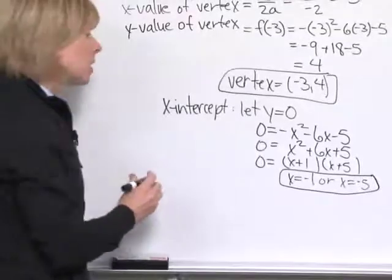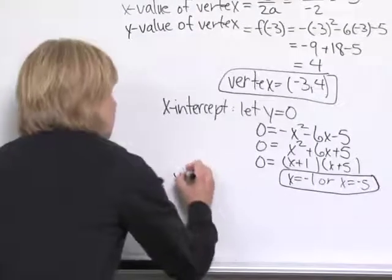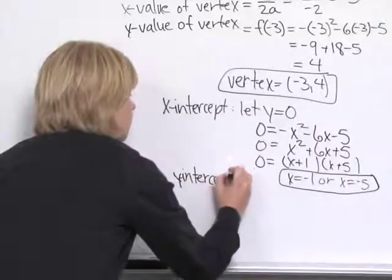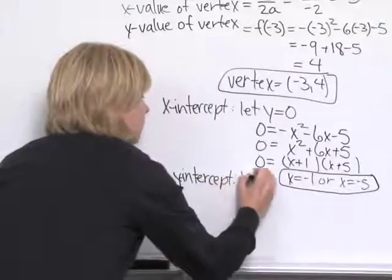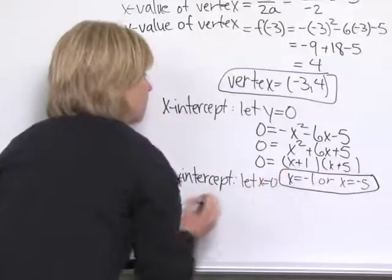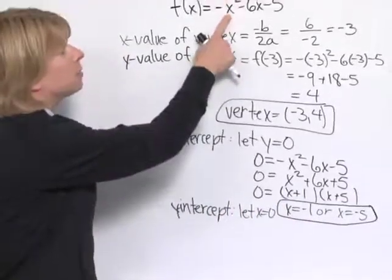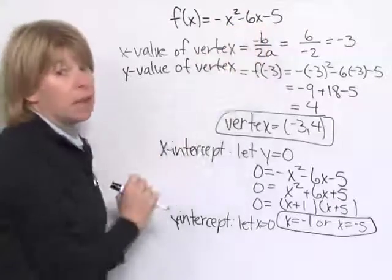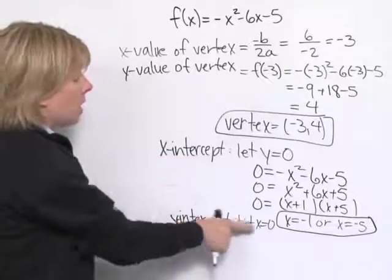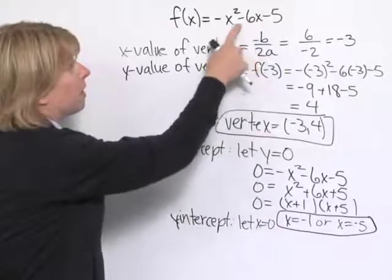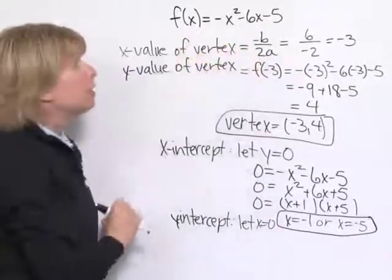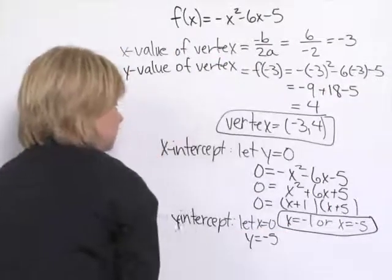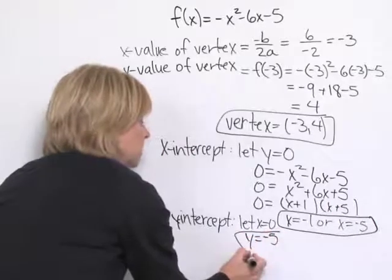And the last thing to do is find the y-intercept. And we do that by letting x = 0. And we can see pretty easily, if we let x be 0, we get 0 - 0 and then - 5. So letting x be 0, we find that the value of the function, or the y-value, is -5. So there's our y-intercept.